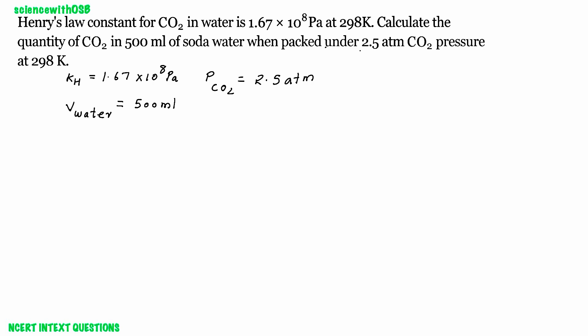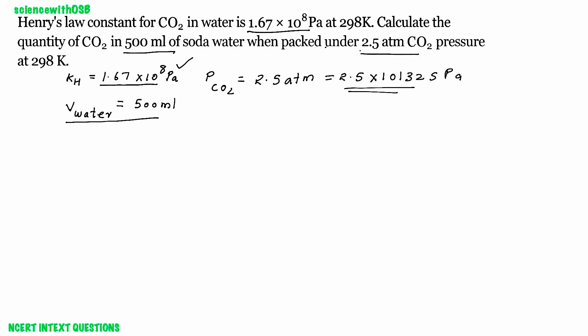In this question, the given values are: Henry's Law constant KH = 1.67 × 10⁸ Pascal, volume of water = 500 ml, and pressure of CO2 = 2.58 atm. Since KH is given in Pascal, pressure must also be converted to Pascal by multiplying by 101325. So we get the pressure in Pascal, and KH is already in Pascal.